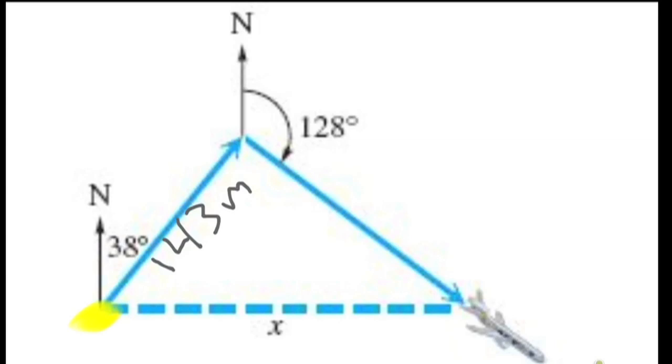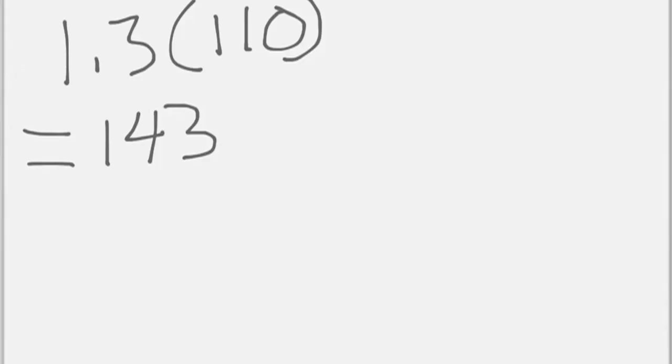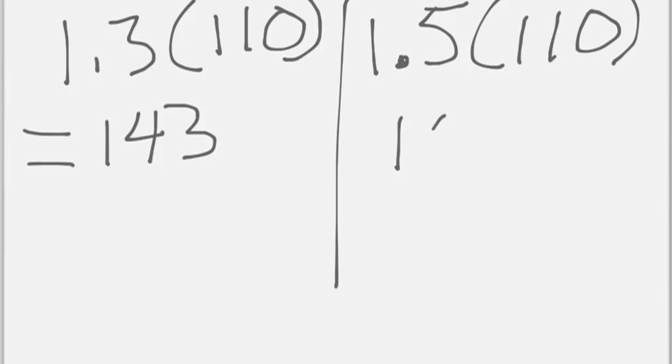So 128 degrees. Serious turn. We need to know how far this length of that plane's trip was. How are you going to do that? This time you flew for an hour and a half. 1.5 times 110 miles an hour. Who's got that for me? 165. And then that's how far he flew there.